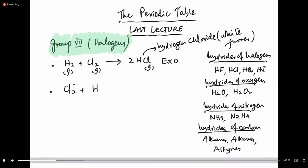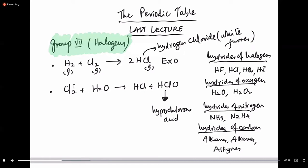Halogens also have the ability to react with water. For example, Cl2 plus H2O gives you hydrochloric acid plus hypochlorous acid. Hypochlorous acid — HClO — is actually your bleaching agent.